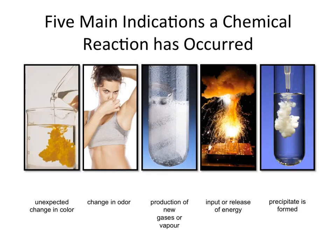There are five main indications or indicators that a chemical reaction has occurred. The first is an unexpected change in color. Here we have two colorless liquids, and when we mix them together, we get this yellow precipitate.